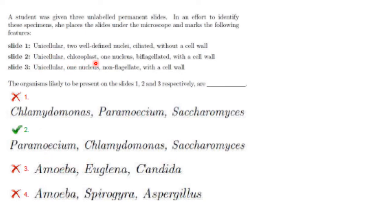Then, unicellular with chloroplast, 1 nucleus, biflagellated, with a cell wall. Having chloroplast means Chlamydomonas, and it is unicellular with only 1 nucleus. Then, unicellular with 1 nucleus, non-flagellate, with a cell wall. That is Saccharomyces. It is unicellular and non-flagellate. So option 2 is correct.